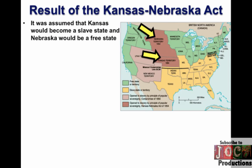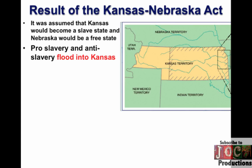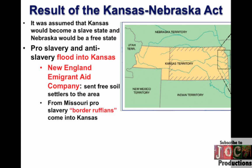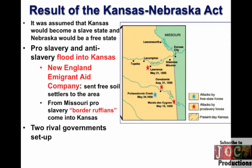The results of Kansas-Nebraska are horrific. It was assumed that Kansas would become a slave state and Nebraska would be a free state. And it basically repealed the Missouri Compromise. Pro-slavery and anti-slavery forces flood into Kansas. In fact, you get an abolitionist group called the New England Immigrant Aid Company sending like 2,000 free soilers into the area to try to ensure that popular sovereignty would go the way of no slavery. You have these so-called border ruffians crossing the border — pro-slavery people from slave state Missouri coming into Kansas.